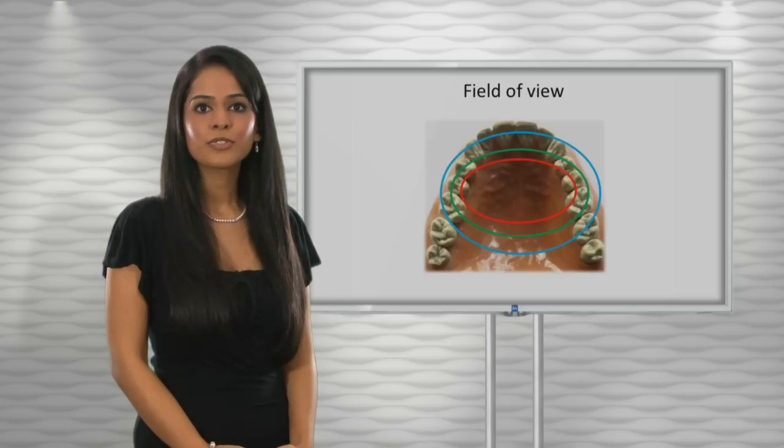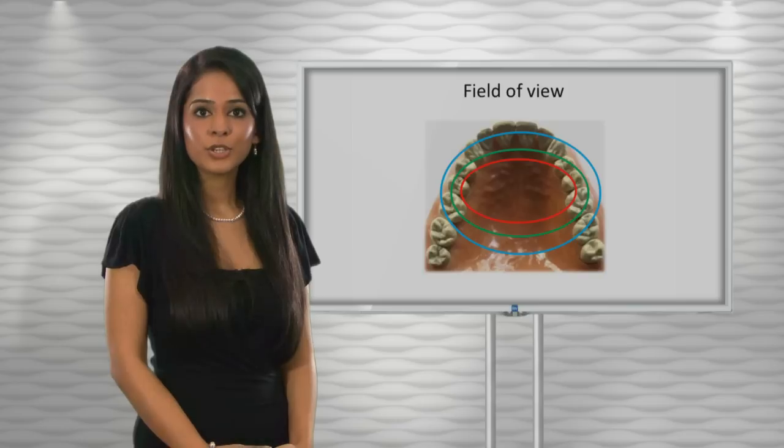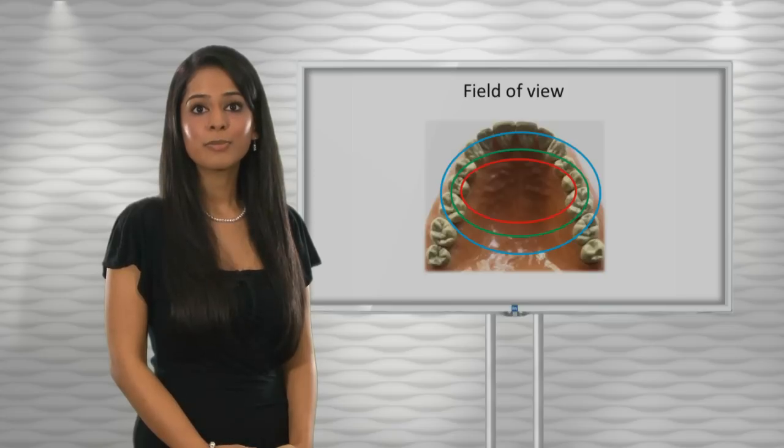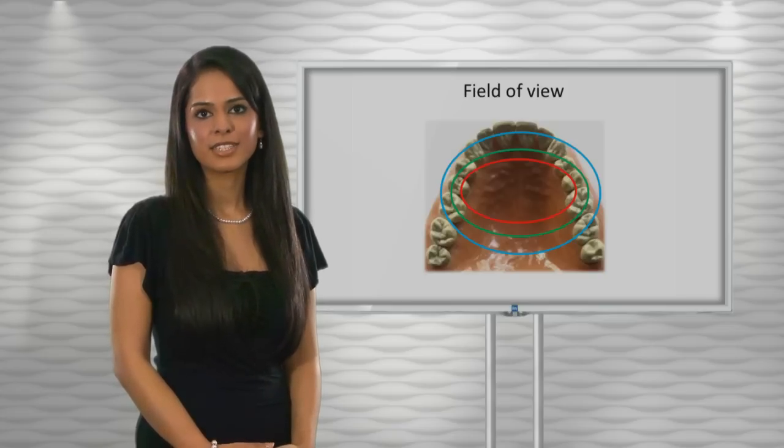The field of view is how much of the working site you can visualize through your loupes. A larger field of view allows you to bring instruments into the field easier and is generally easier to adapt to. For 2.5 magnification, a good field of view would be approximately 10 centimeters.